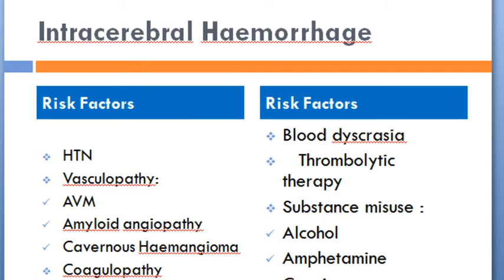Now discussing intracerebral hemorrhage. Risk factors include hypertension, vasculopathy such as arteriovenous malformation, amyloid angiopathy, cavernous hemangioma, coagulopathy, anticoagulants, blood dyscrasias, and thrombolytic therapy.